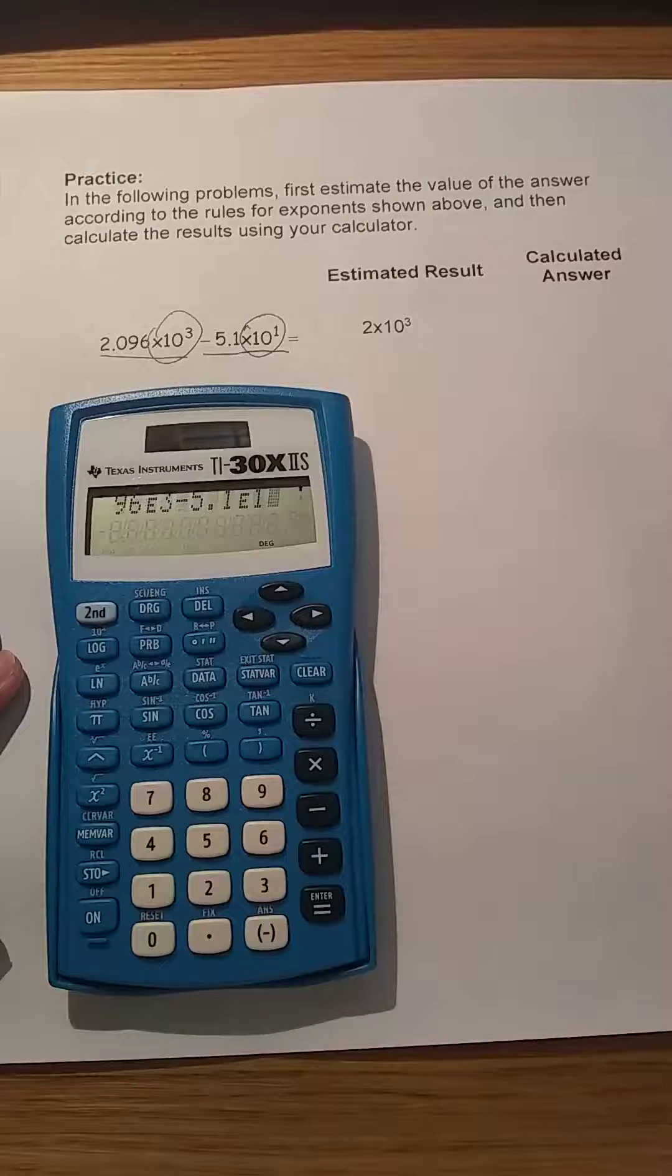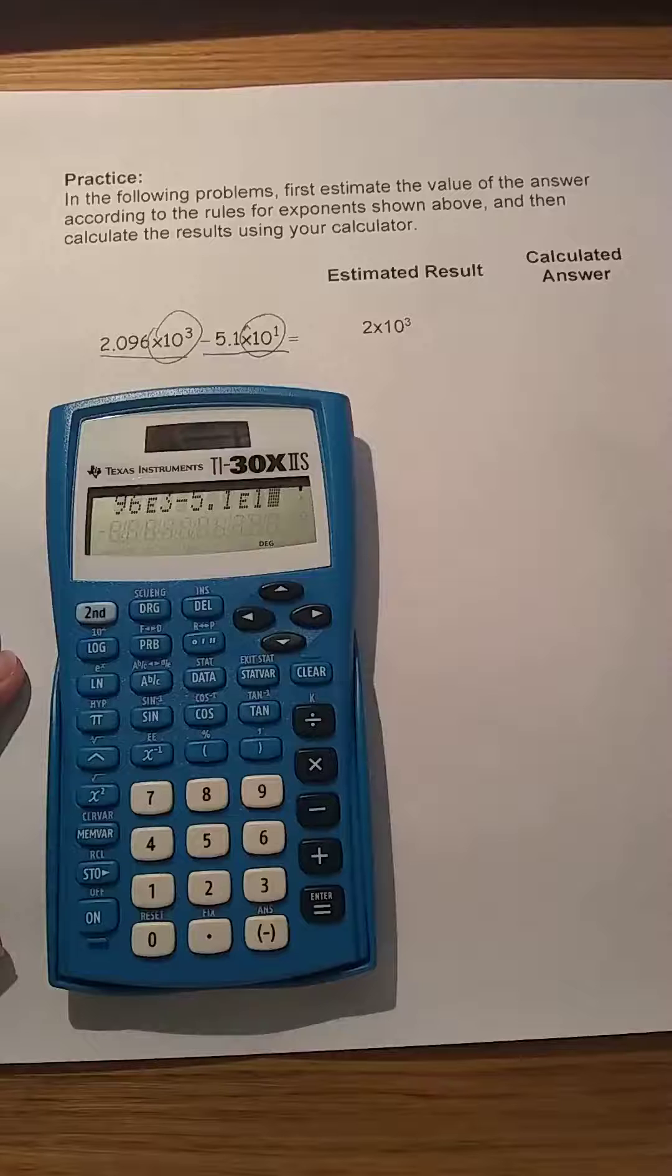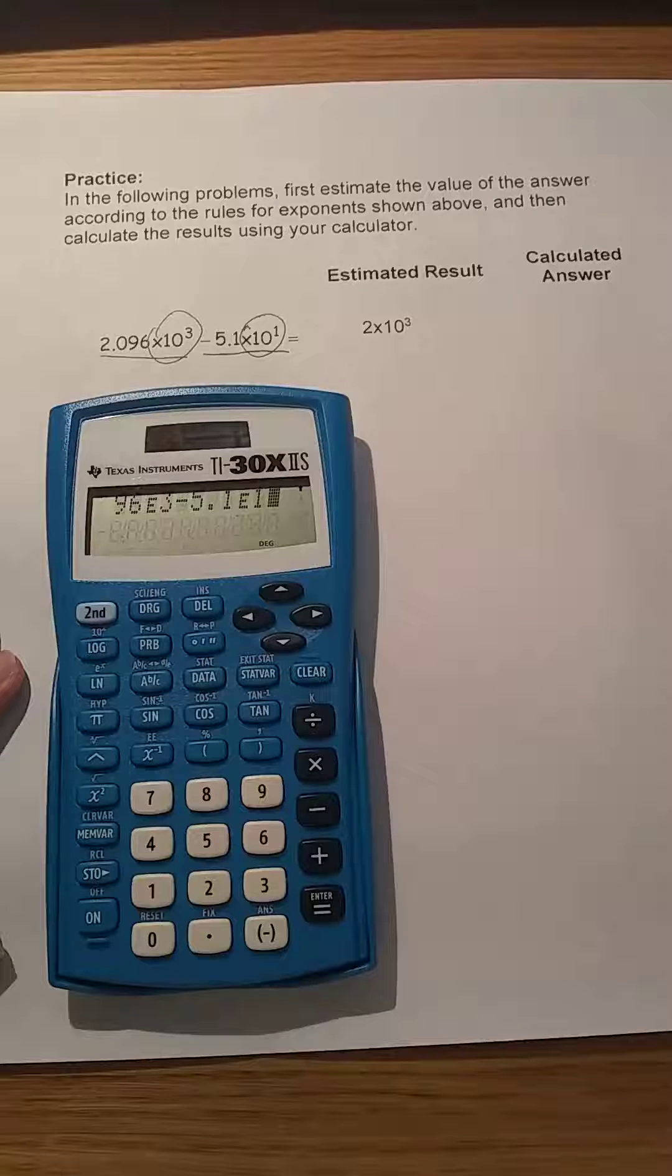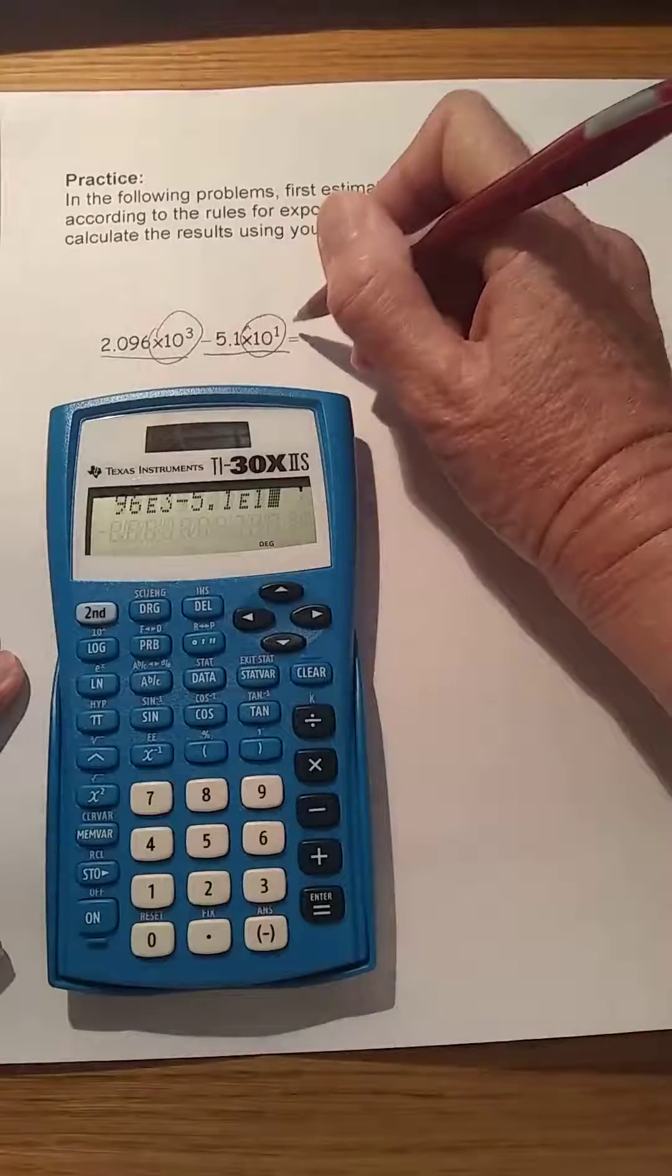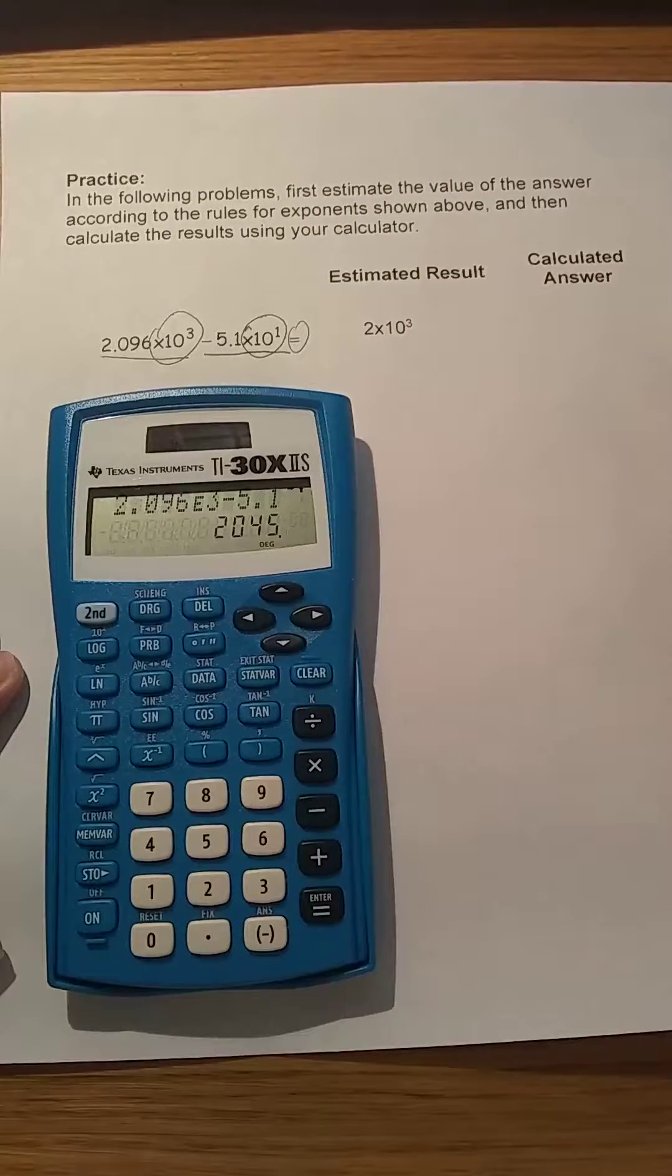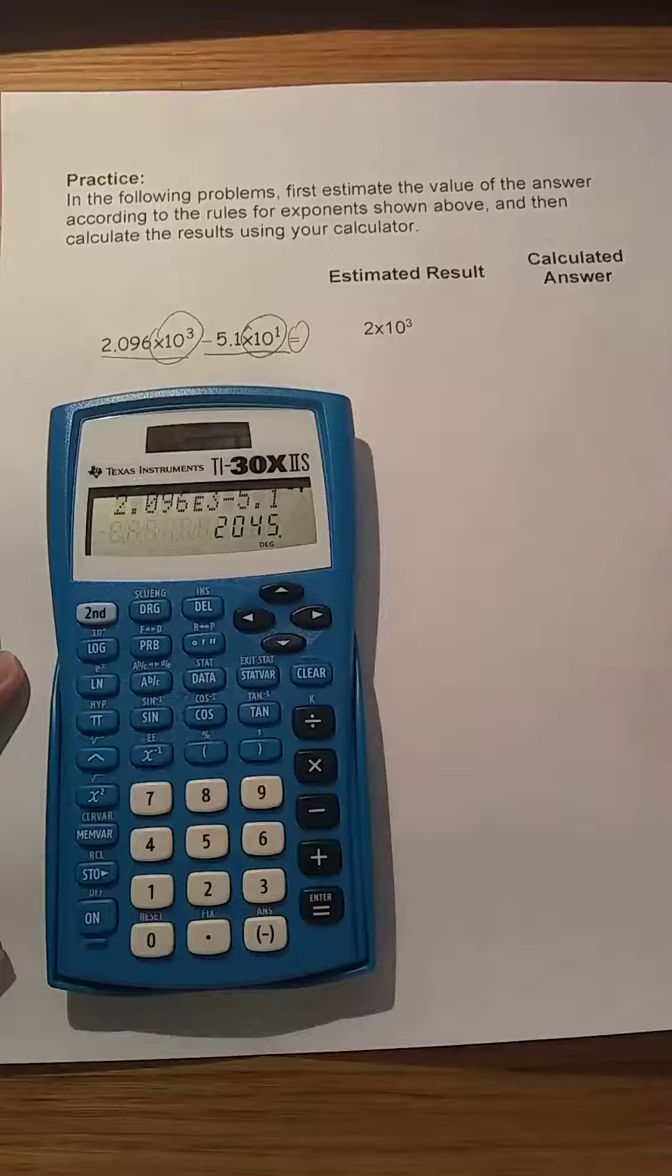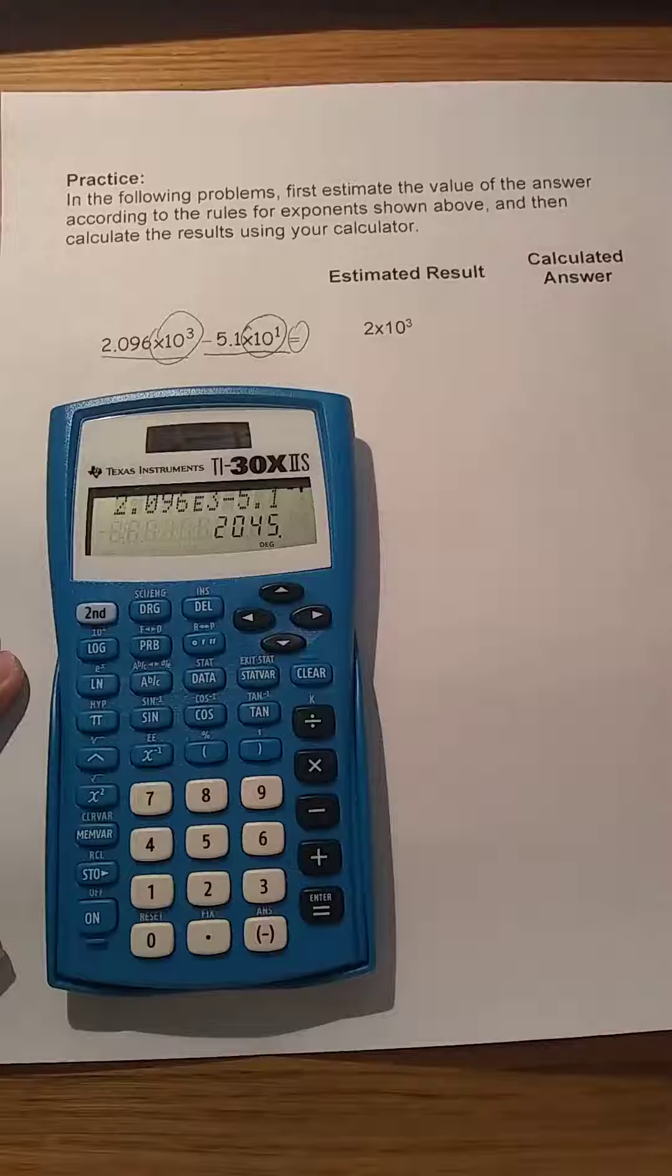Notice that we never typed in 10. When we hit second, ee, that's putting in the times 10 for us. Next, we'll hit the equal sign to get the value of our answer, and the calculator shows 2,045.